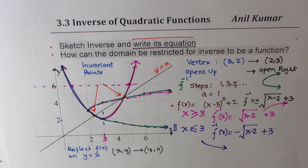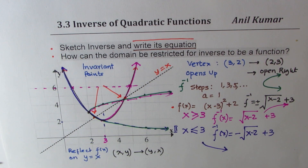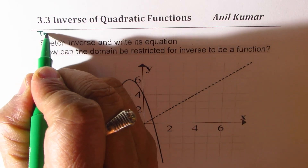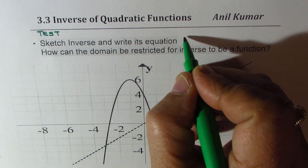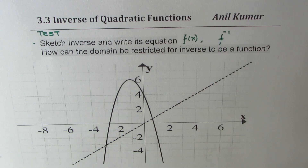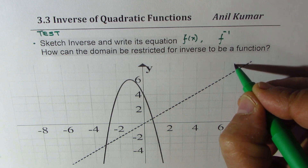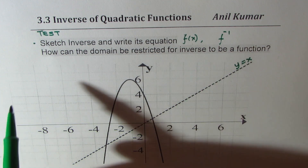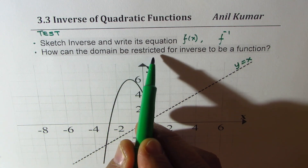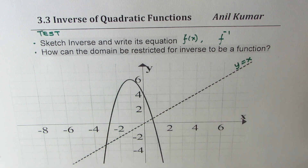Here is another question for you — treat it as a test question. Try to answer it yourself. You need to sketch the inverse and write equations for both the function and its inverse. The parabola represents the function; reflect it on the line y equals x to get the inverse. Then determine how the domain can be restricted for the inverse to be a function. Feel free to pause the video and write down your answers, then check with my solution.